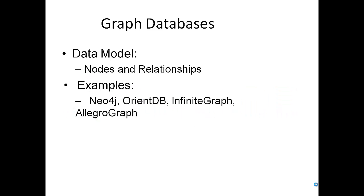So without wasting time, what is a graph database? Generally the data model is nodes and relationships, and some examples could be Neo4j, OrientDB, InfiniteGraph, AllegroGraph. These are some examples of software which you can use to understand graph databases.